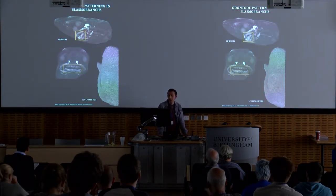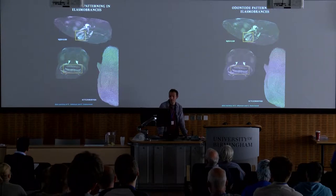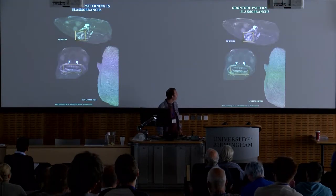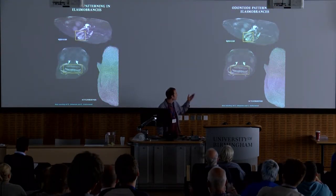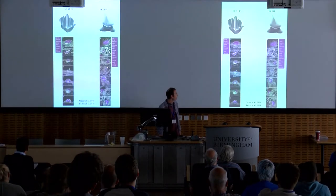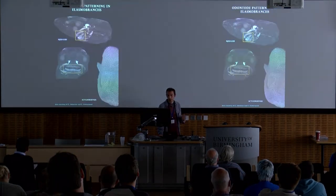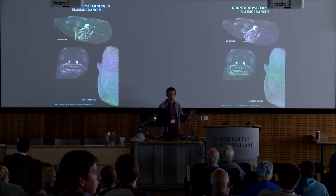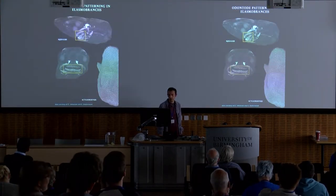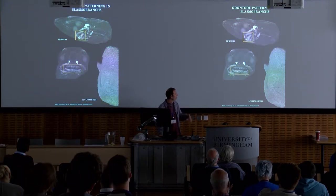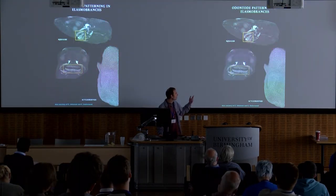This is what typical jawed fish dentitions look like. They're very ordered in tooth rows, and each tooth row — or tooth family — has the potential of generating new teeth and shedding old ones. This is very different from scales, which have a more random arrangement. One of the key questions is how this difference is explained.